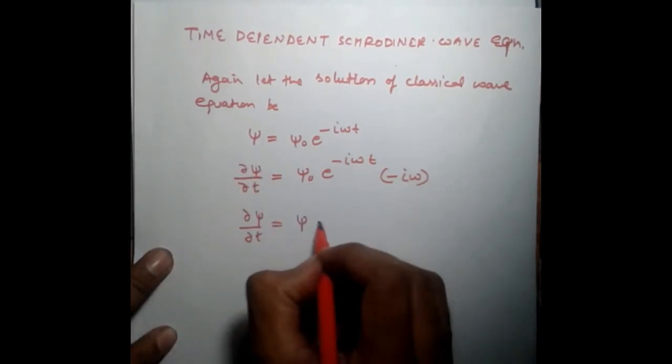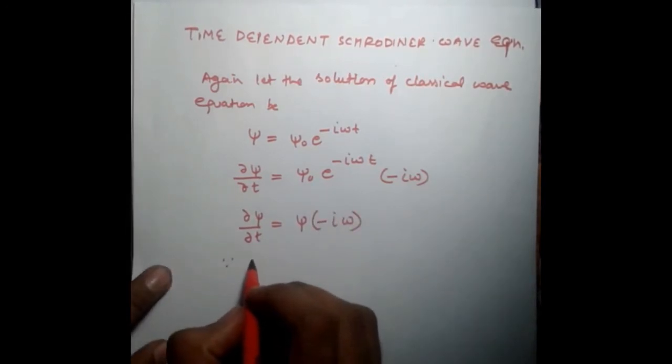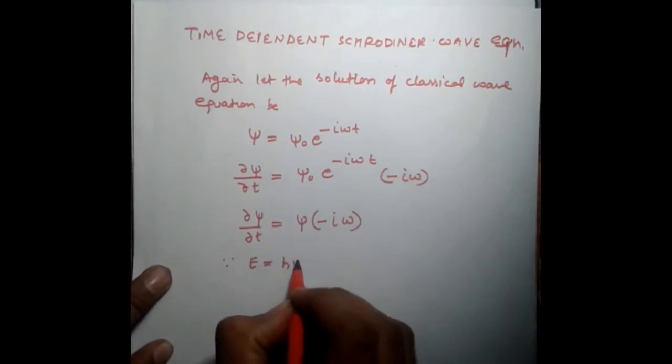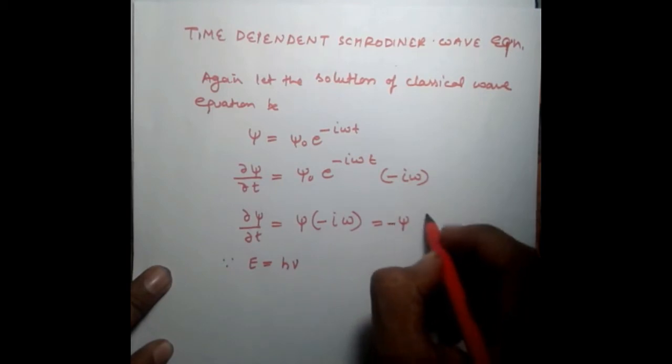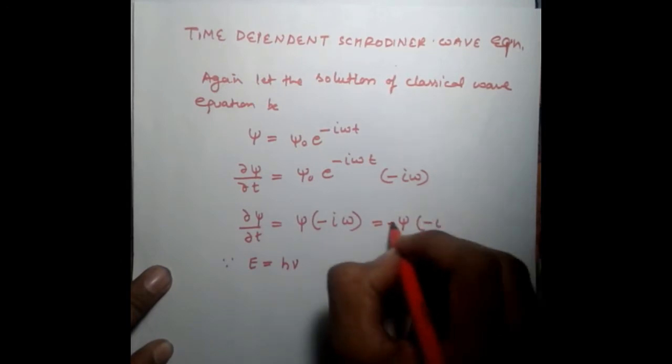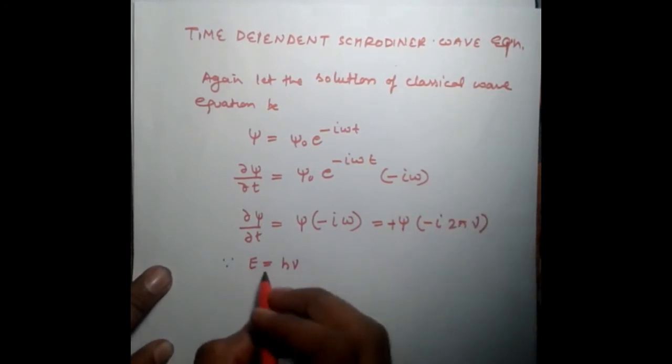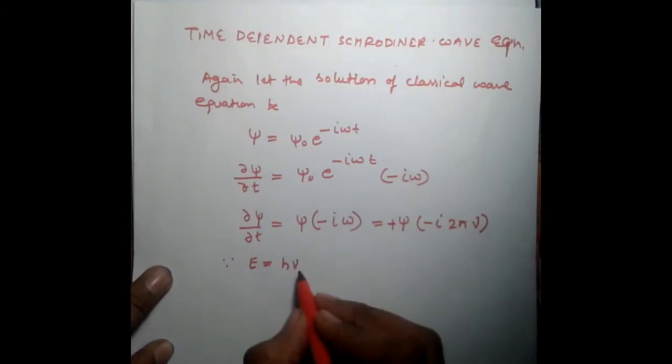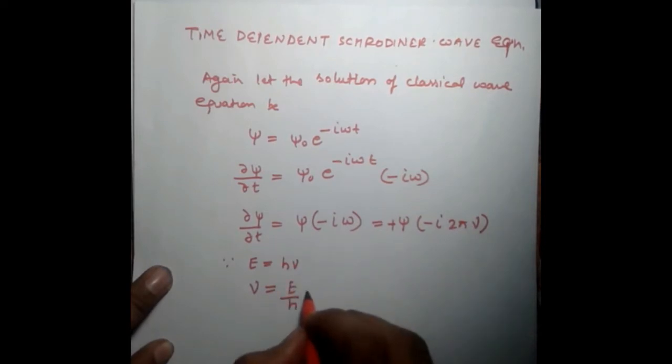Since E equals hν and ω equals 2πν, therefore E equals hν for a photon, where ν equals E/h.